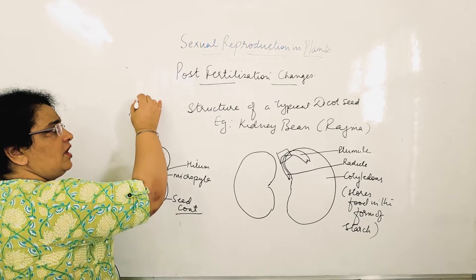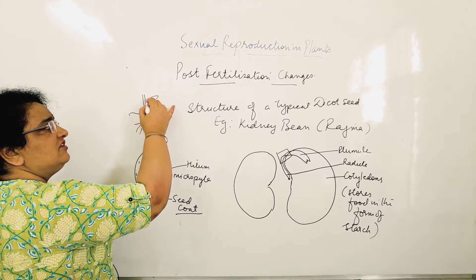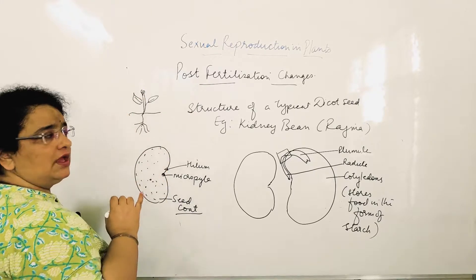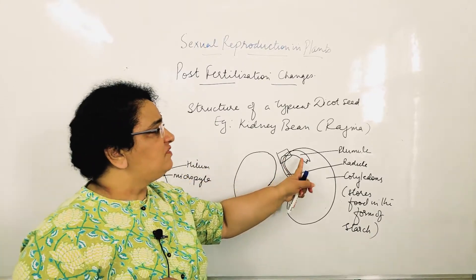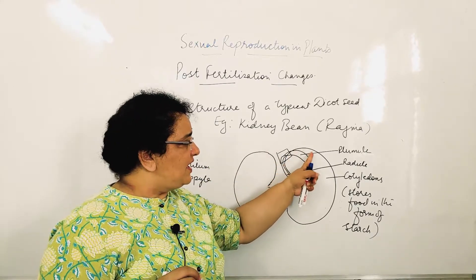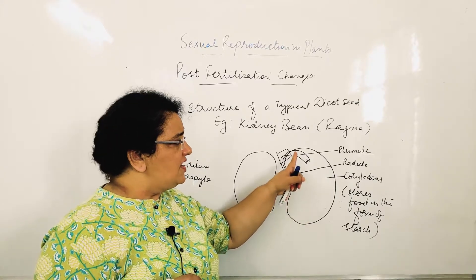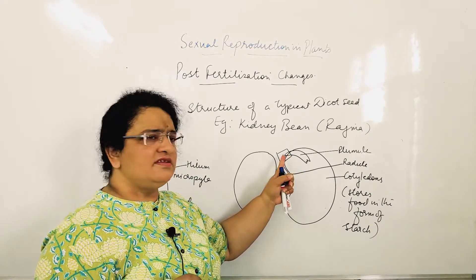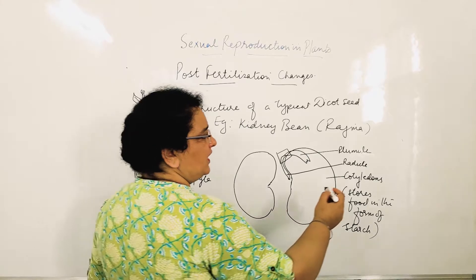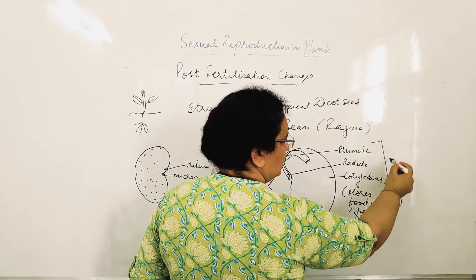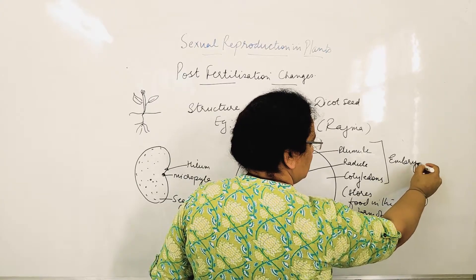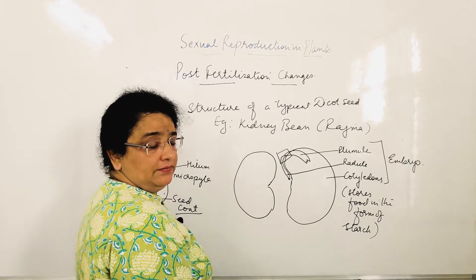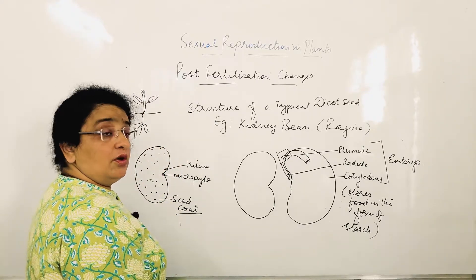The radicle gives rise to the root system and the plumule gives rise to the shoot system of the plant. The embryo also has an epicotyl and hypocotyl, but we don't need to go into too much detail. So the complete embryo consists of cotyledons, plumule, radicle, epicotyl, and hypocotyl. Even the cotyledon portion is part of the whole embryo. This was the typical structure of a dicot seed — the structure of a bean seed.